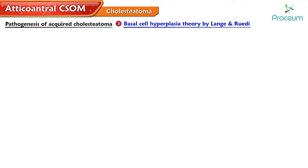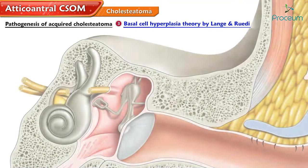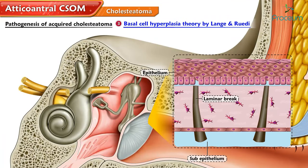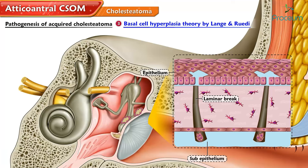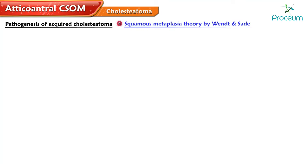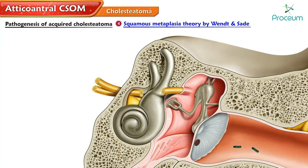Basal Cell Hyperplasia Theory by Lange and Rudi. Prickle epithelial cells of pars flaccida may invade the subepithelial tissue by means of proliferating columns of epithelial cells. These basal lamina breaks allow the invasion of epithelial cones into subepithelial connective tissue, leading to the formation of microcholesteatomas. This later enlarges and perforates an intact tympanic membrane, presenting as primary acquired cholesteatoma. Squamous Metaplasia Theory by Wendt and Said: middle ear mucosa can undergo metaplasia due to repeated infection through a pre-existing perforation, resulting in secondary acquired cholesteatoma.